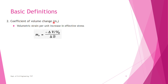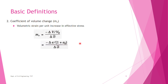The next term is coefficient of volume change, Mv. It is defined as the volumetric strain per unit increase in effective stress. Since volumetric strain is ΔV/V₀ and increase in effective stress is Δσ̄, the equation is: Mv = −(ΔV/V₀)/Δσ̄. From this, we can also write Mv = Av / (1 + e₀), where e₀ is the initial void ratio.